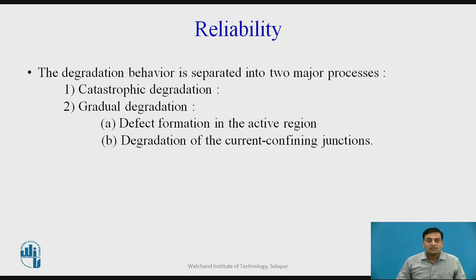The degradation behavior may be separated into two major processes: catastrophic and gradual degradation. Catastrophic degradation is a result of mechanical damage to the mirror facets and leads to partial or complete laser failure. It may be limited by using the device in a pulsed mode.